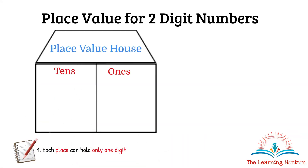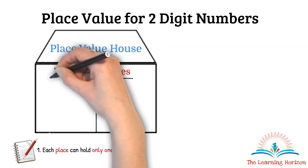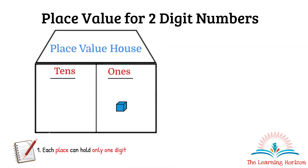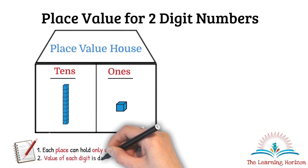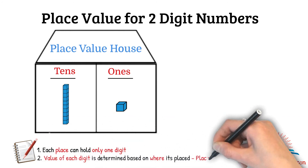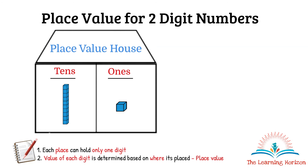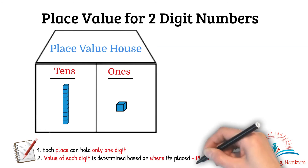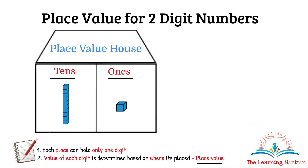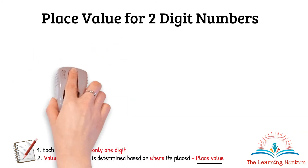Each place represents a different amount — the ones place represents the number of ones, and the tens place represents the number of tens. The value of each digit is determined by where it is placed, and that is called the place value. Let us understand the place value concept with an example.